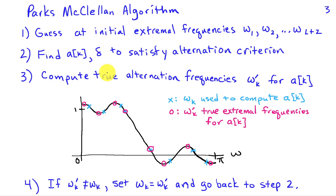That is, our guess actually lines up with the alternation frequencies of the underlying response associated with those a sub k's, the black curve. And at that point we'll have our set of coefficients, AK, which we can use to find the impulse response of the FIR filter.